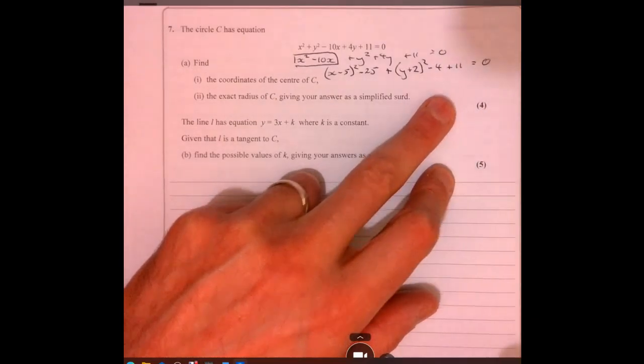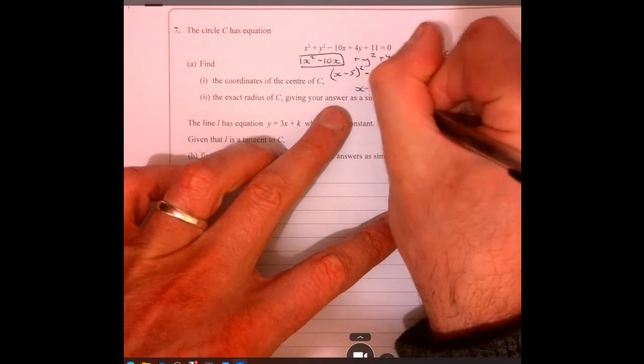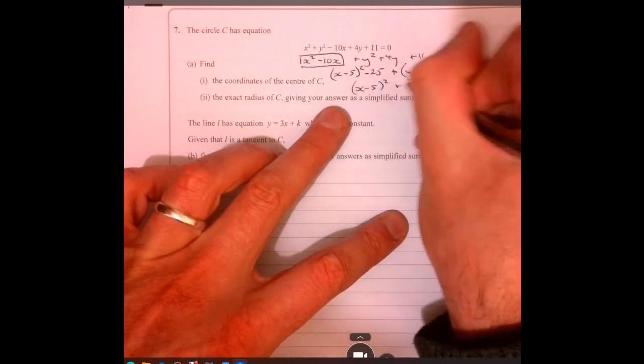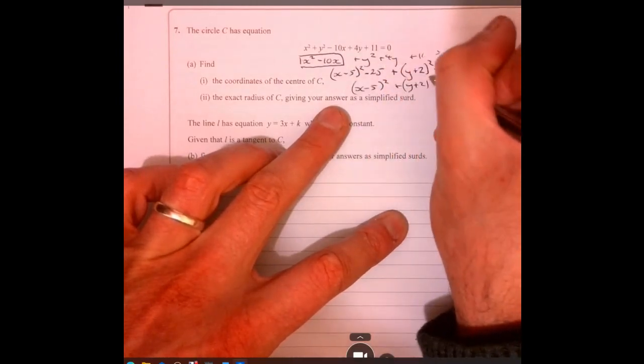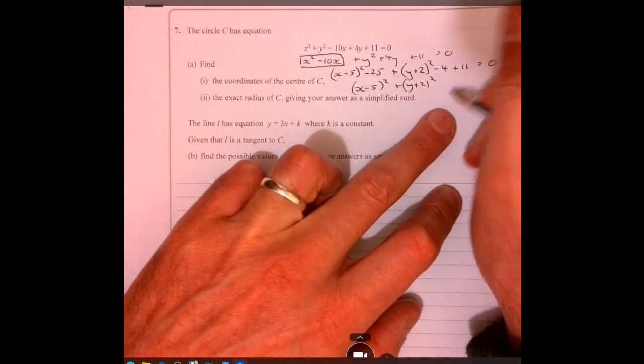And that equals 0. So if we just tidy that up a little bit, we're going to have plus 1 plus 2, minus 25, minus 4, and plus 11.